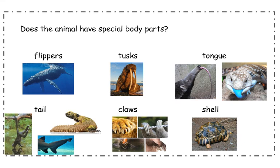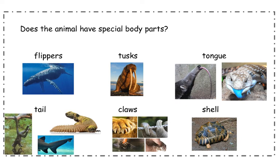One last example of a special body part is a shell. Turtles and tortoises have shells, and they're super important — they help protect the turtle or tortoise. They can sort of pull their arms and legs in and hide. But this turtle also has a special pattern to help it hide in the grass; it kind of looks like the shadows in the grass. So there are lots of different examples of special body parts that animals have.